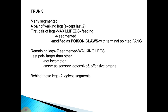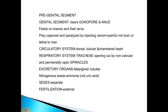The remaining legs are seven-segmented and known as walking legs; the last pair is usually larger than the others, serving as sensory, defensive and offensive organs rather than for locomotion. Behind these are two legless segments: the pre-genital segment and the genital segment, which bears the gonopore and anus. The centipede feeds on insects and their larvae, capturing prey by injecting venom, which is painful but not toxic or lethal to man.